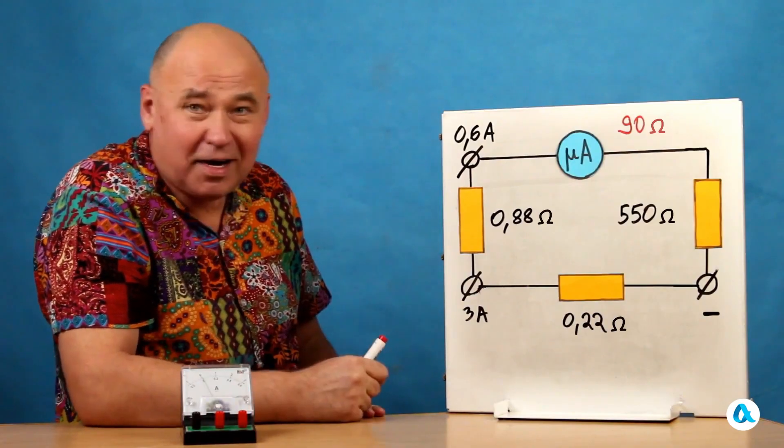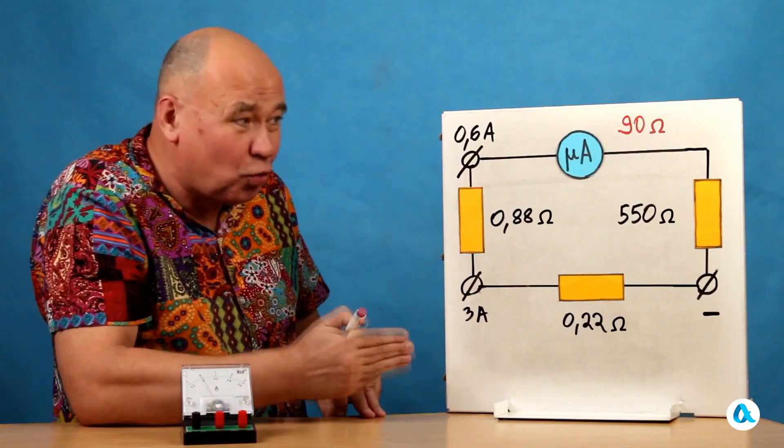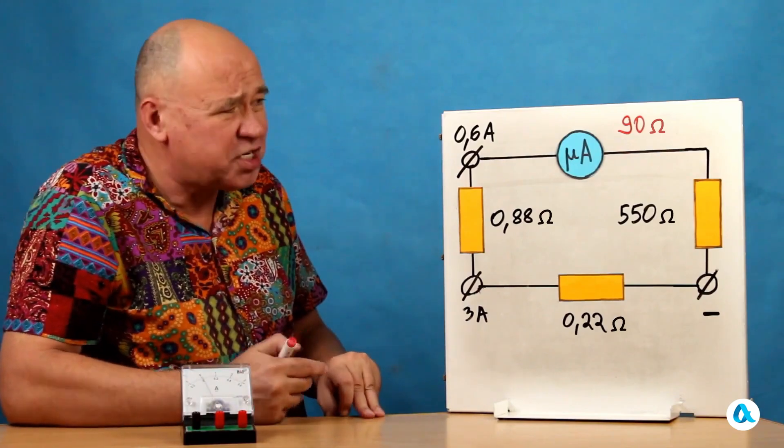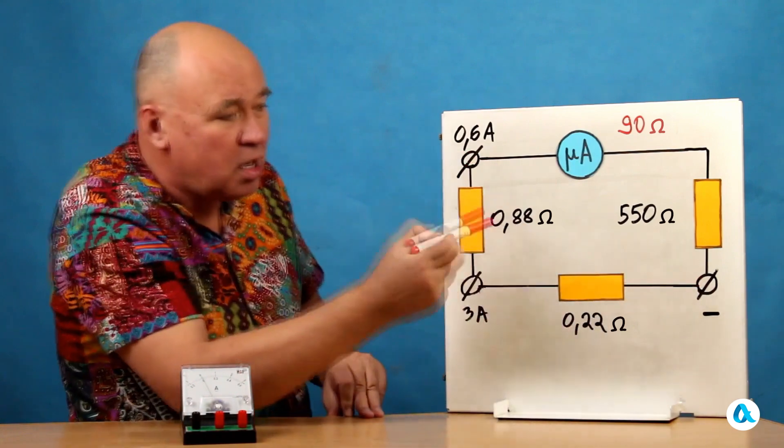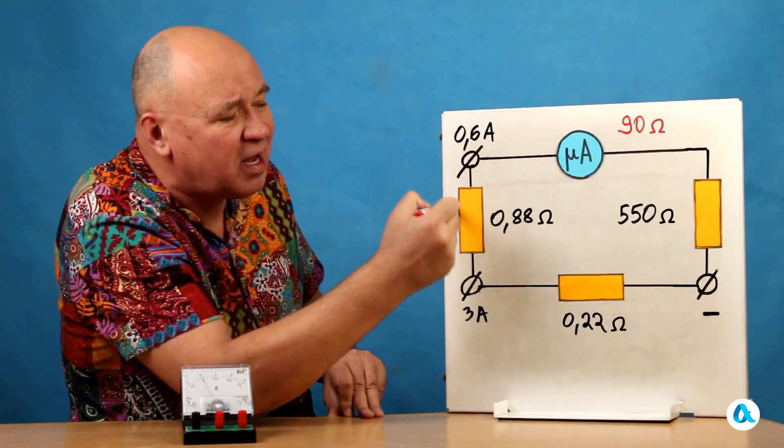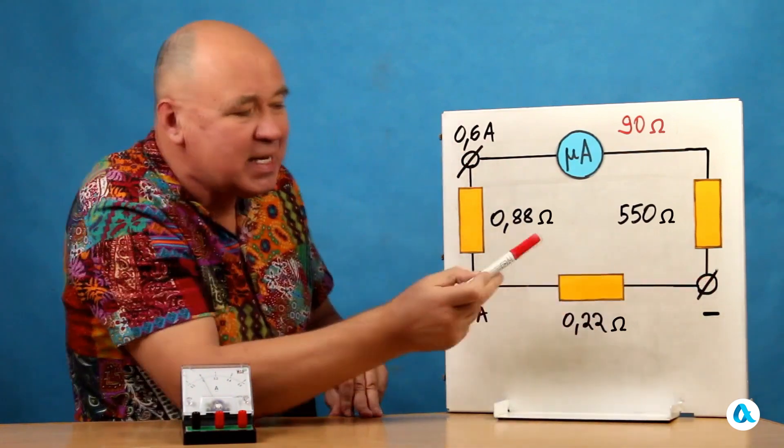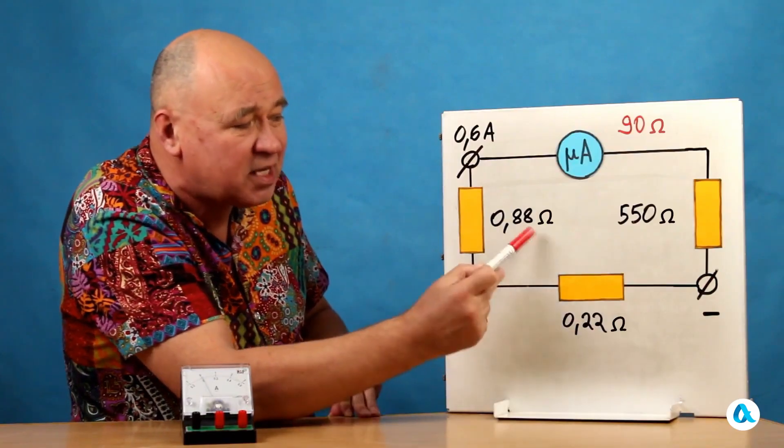Now, when I want to measure currents using the second scale, 0.6 amperes, I will connect here and to the negative terminal. Now, my main line is this one. And here, I have 0.22 ohms and another 0.88.